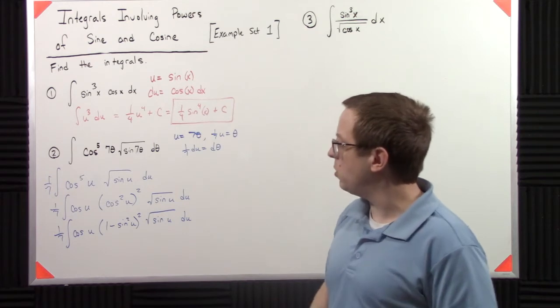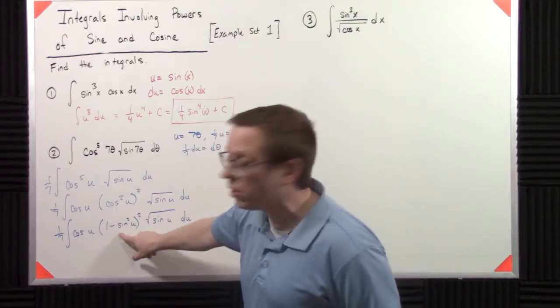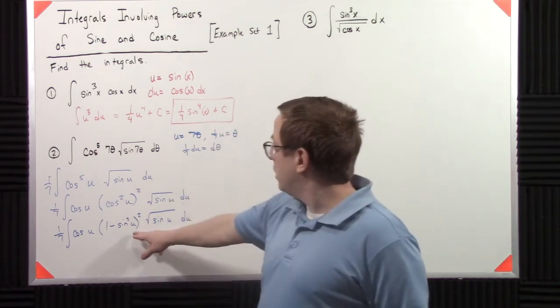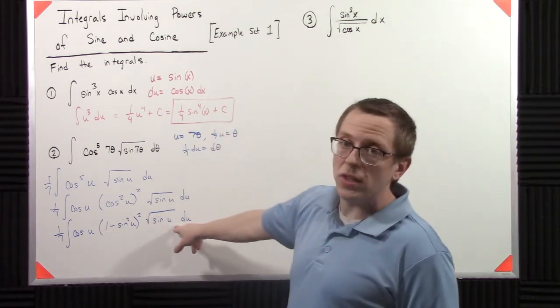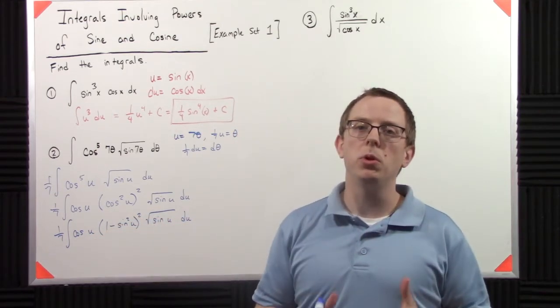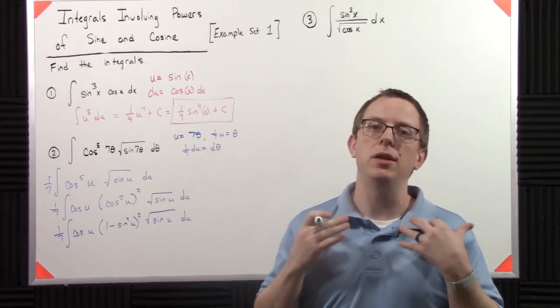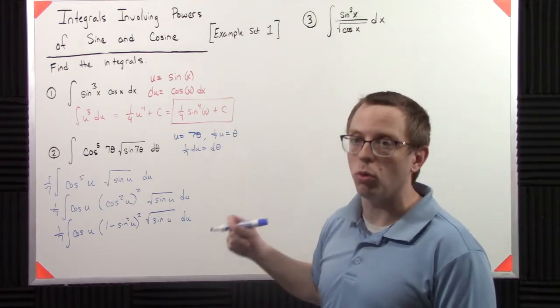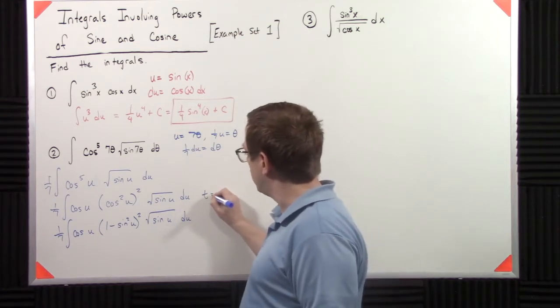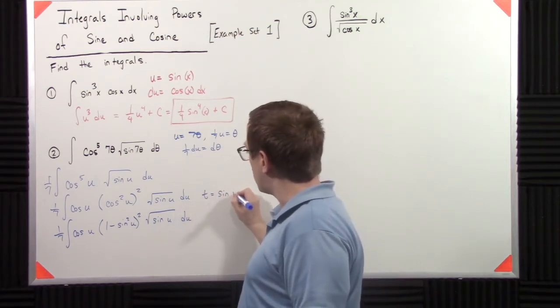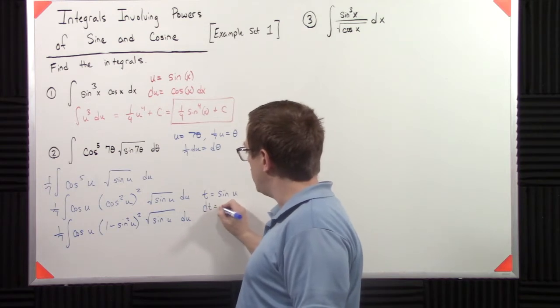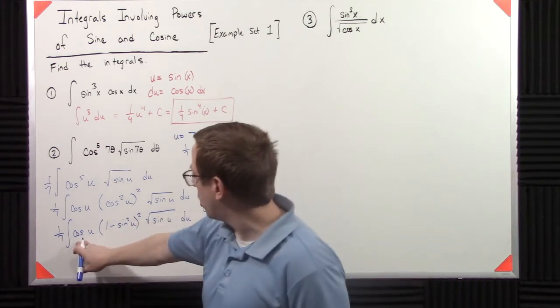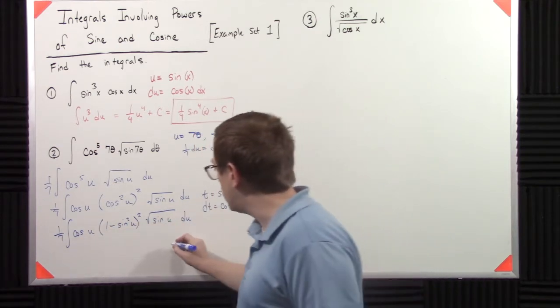So we have cosine of u, one minus, so this cosine squared gets replaced with one minus sine squared. So now we have all these sines and one dangling cosine. This will allow us to make the substitution that is part of the trigonometric integral method. So I'm going to say t equals sine, so dt is cosine u du. So what that allows us to do is I've got cosine u du. That's now a dt.